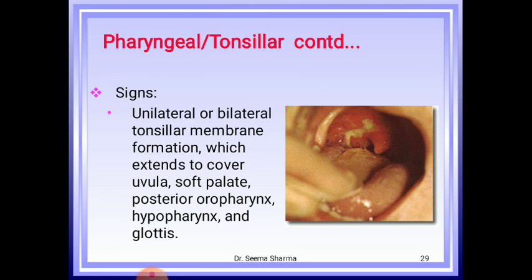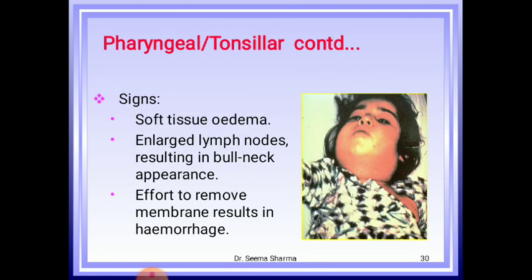Signs of pharyngeotonsillar diphtheria include unilateral or bilateral tonsillar membrane formation which extends to cover the uvula, soft palate, posterior oropharynx, hypopharynx, and glottis. Signs also involve soft tissue edema and large lymph nodes resulting in bull neck appearance, especially involving submandibular lymph nodes. Efforts to remove the membrane result in hemorrhages.